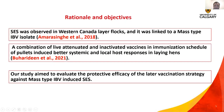Our rationale and objectives: shell-less eggs were observed in Western Canada layer flocks and were linked to a mass-type IBV isolate. The combination of live attenuated and inactivated vaccine and an immunization schedule of pullets induced better systemic and local host responses in laying hens. So our objectives aim to evaluate the protective efficacy of this vaccination strategy against mass-type IBV-induced shell-less egg syndrome.